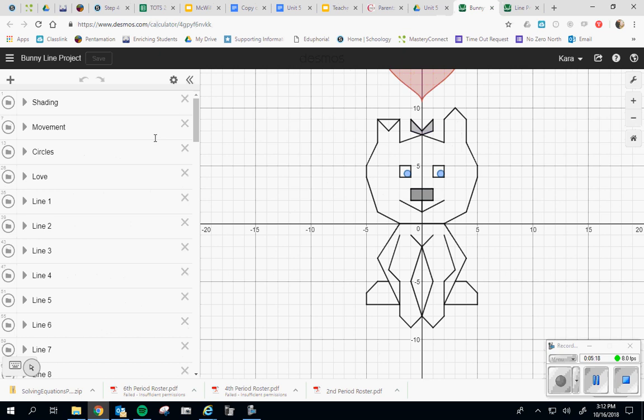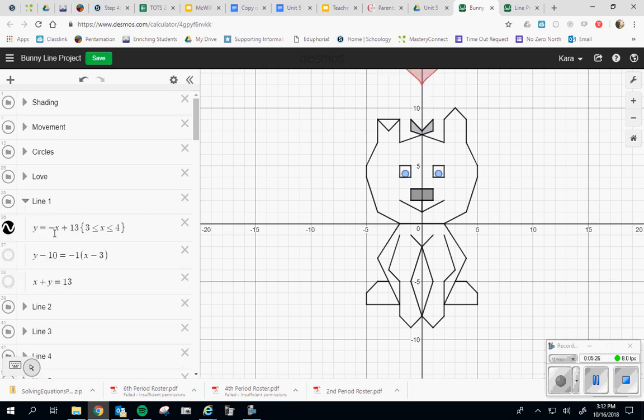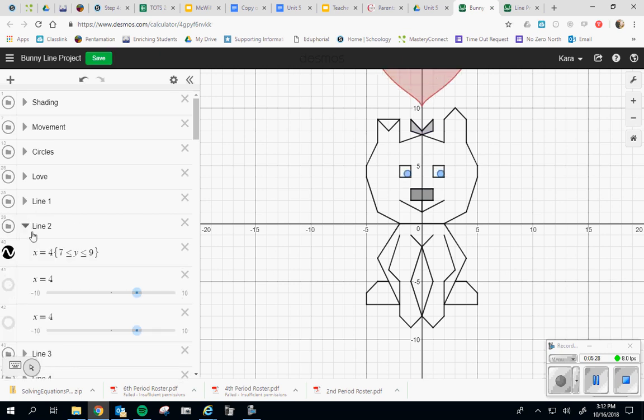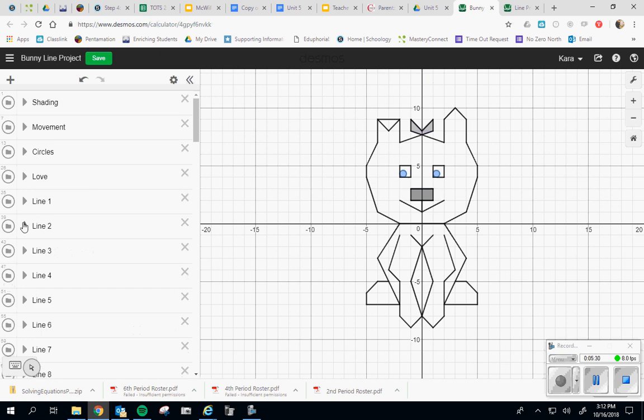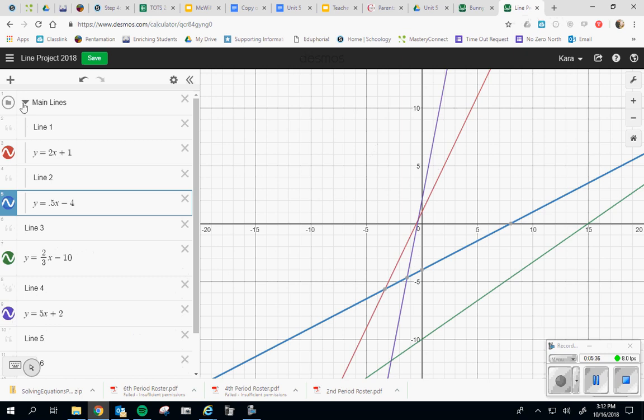Here's another example that went above and beyond. She did a folder for every single line. Again, you can do that if you want to, but it's by no means required. So when I open up her line one, there's her three forms. When I open up her line two, there's her three forms. Y'all do not have to do that, however.